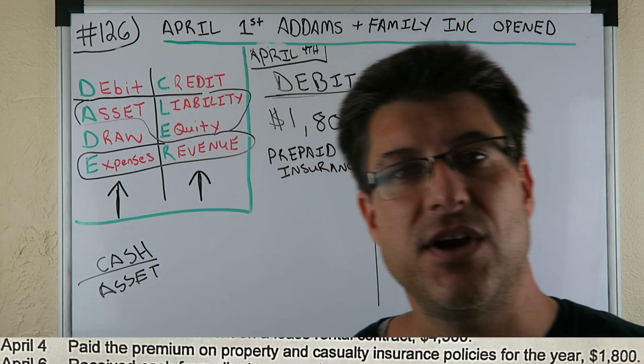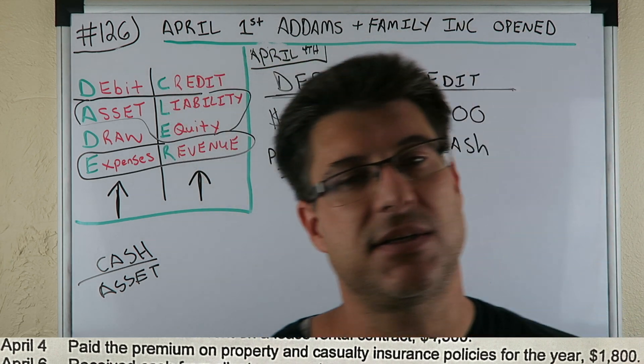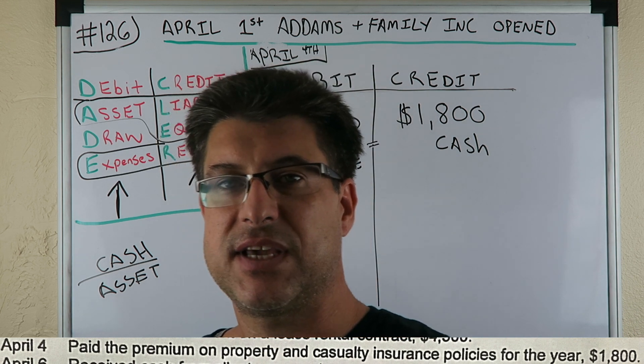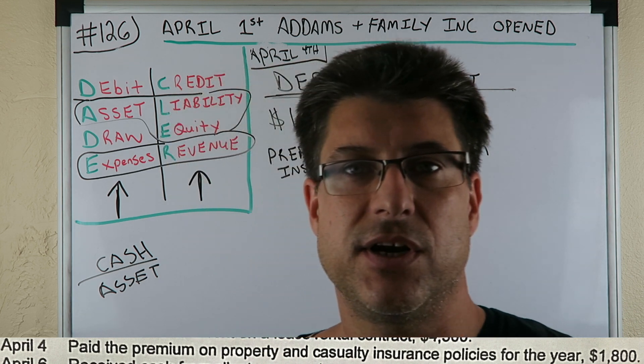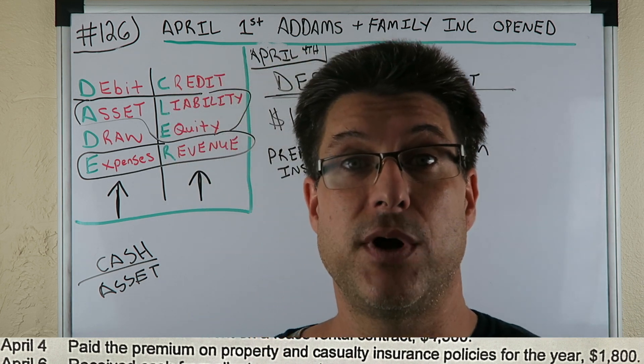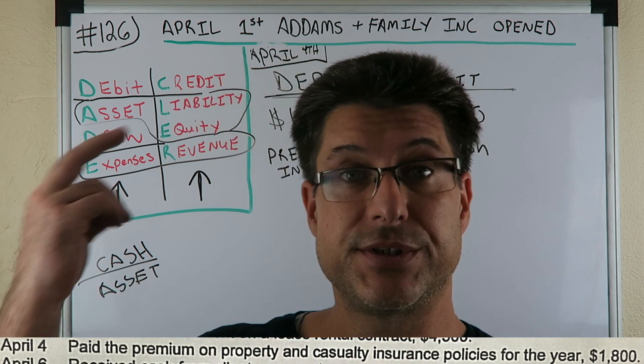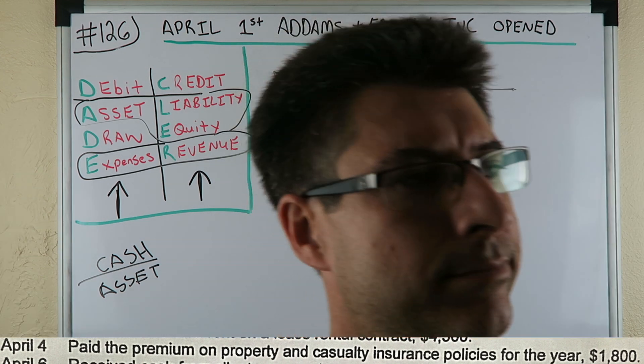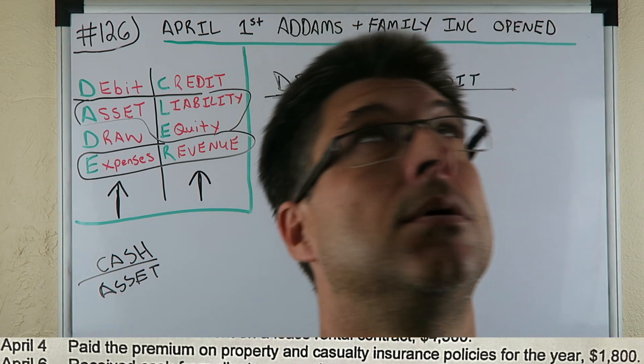So we have prepaid insurance debit for $1,800 and our credit is $1,800 cash, because we have cash leaving. Debits of $1,800 equal $1,800 of cash. That is our video — keep going in this accounting cycle. I'll see you for the next one. Deuces.